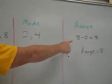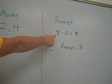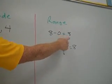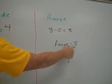For the range, you take the highest number, which was 8, subtract the lowest number, which was 0. Gives you 8. So your range for this set of data is 8.